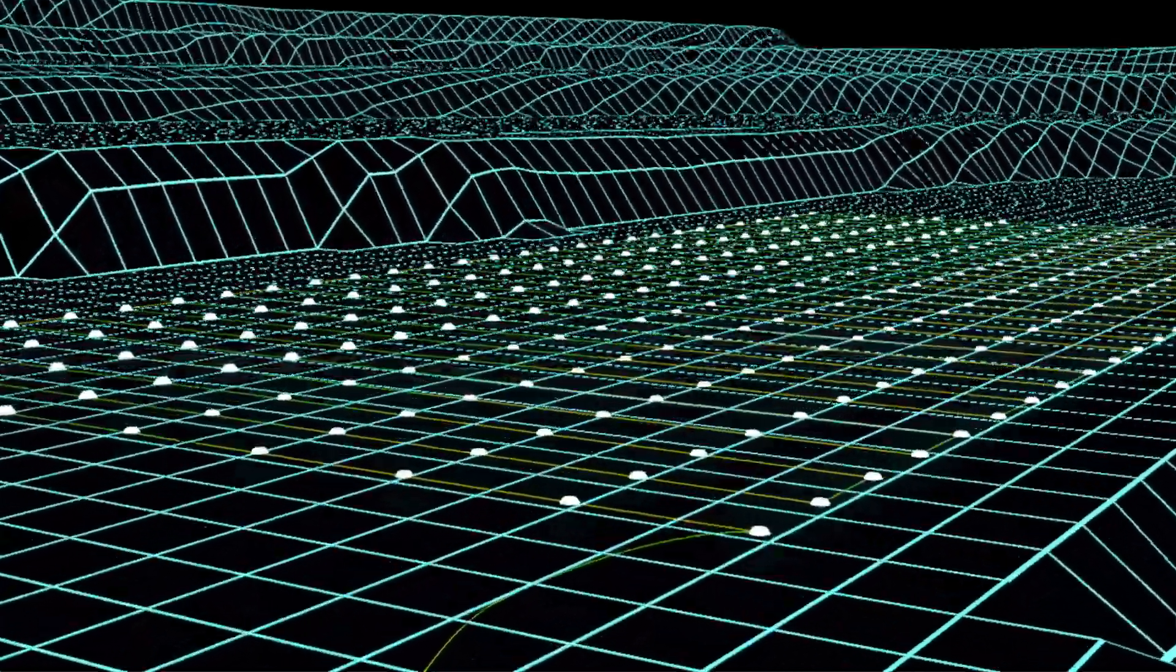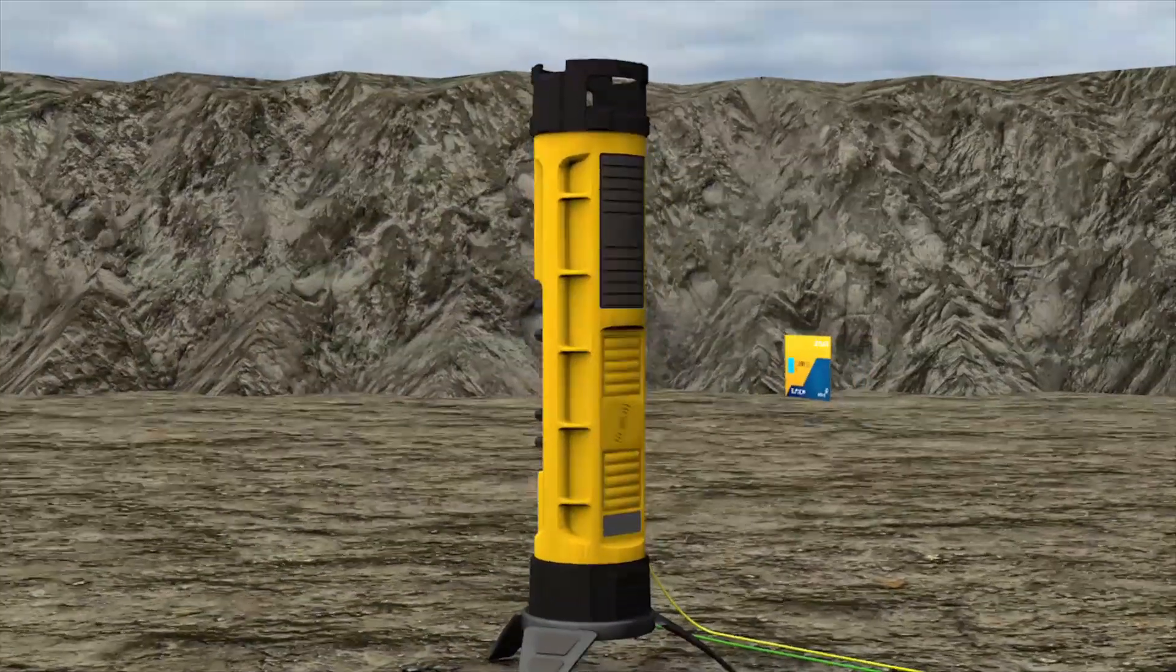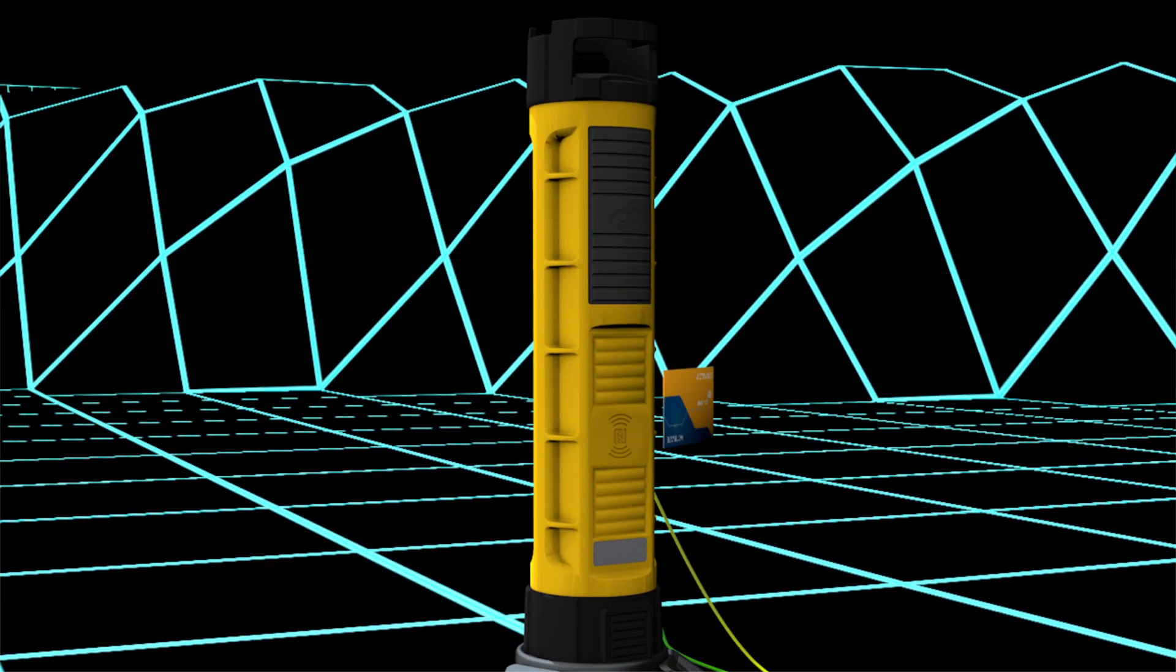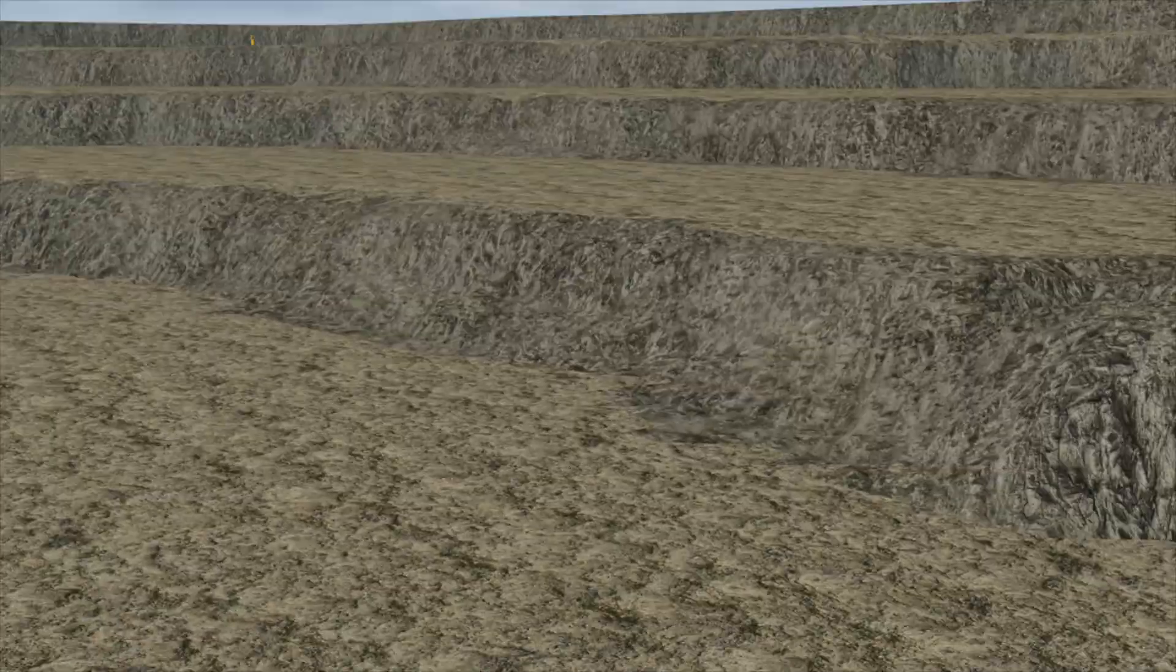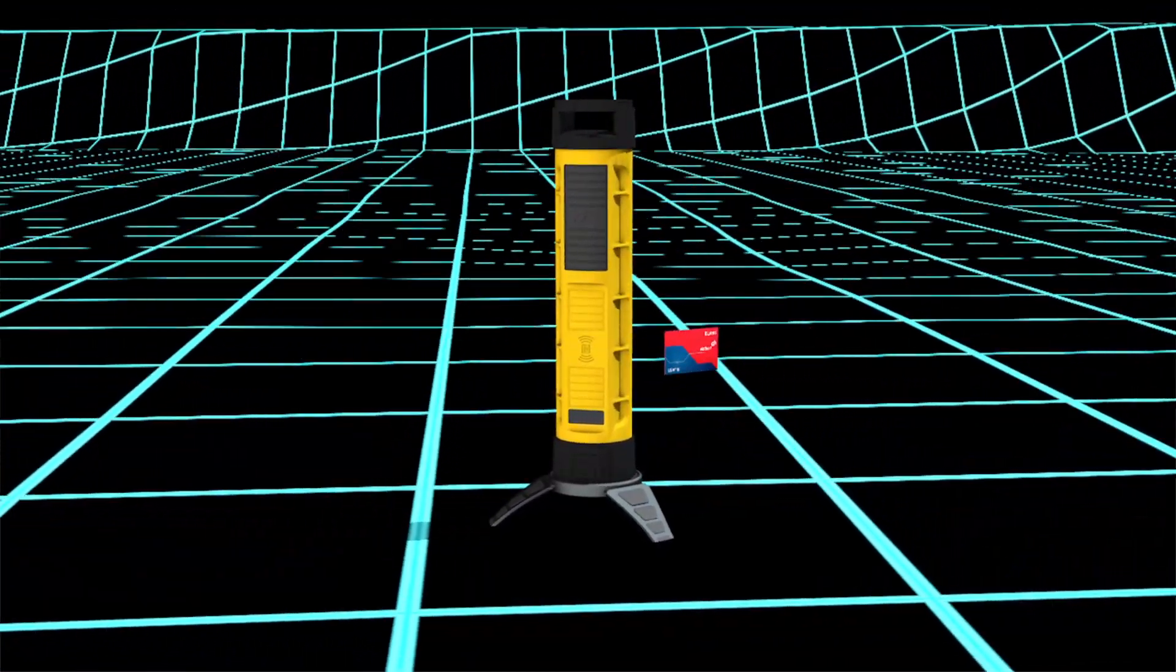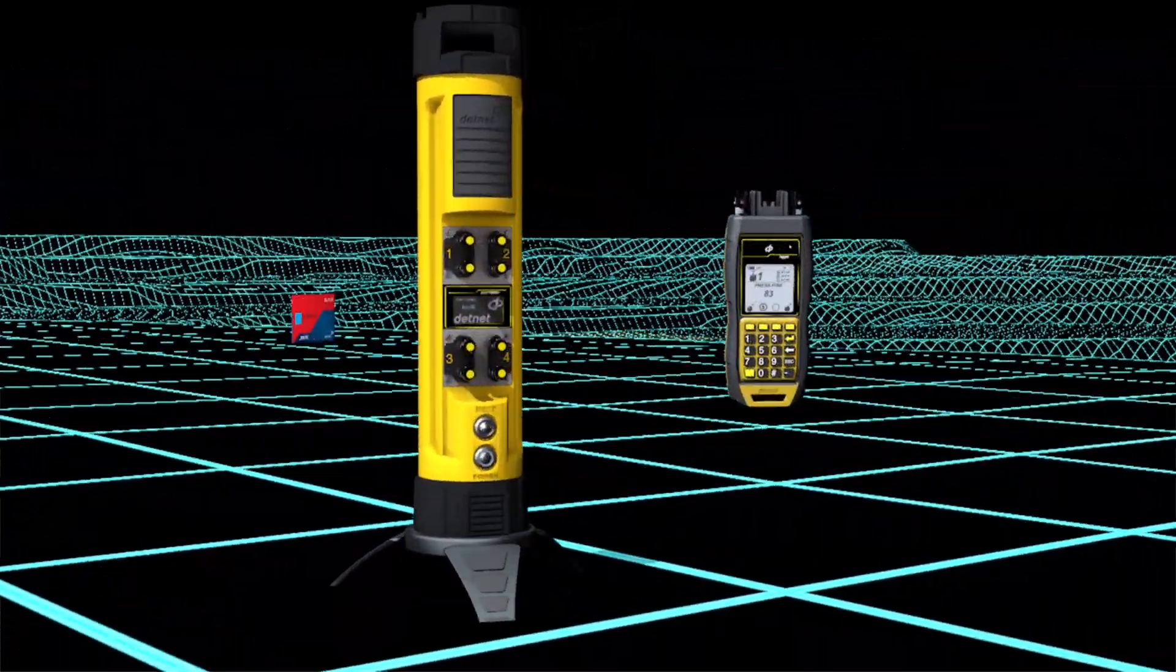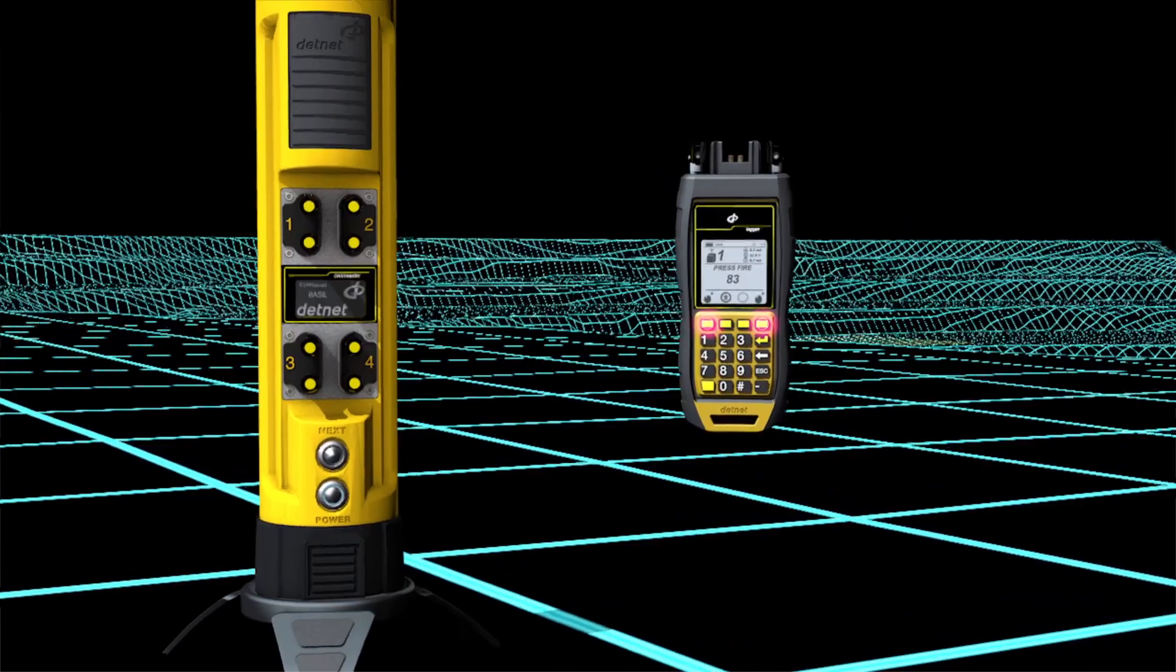For safe remote firing, the DigiShot Plus 4G bench commander is armed with the yellow blast card. Now at the safe blasting point, the blasting process is initiated using the red blast card, and the user fires the blast from the CE4 tagger by pressing the fire buttons.